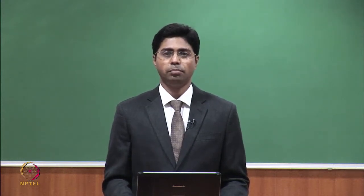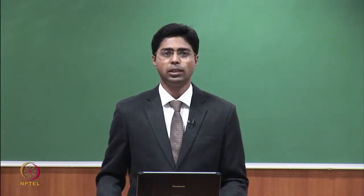Before we move further, we need to first understand why there was a need for double flatbed knitting technologies. In the last lecture, I introduced a new topic related to knitting, which was fabric curling. I demonstrated how a single jersey fabric, which is usually produced by single bed machines, curls from the edges. The nature of curling is highly complicated. Along the wale line, the loop tries to bend from front to back, and along the course line, the loops try to bend from back to front.